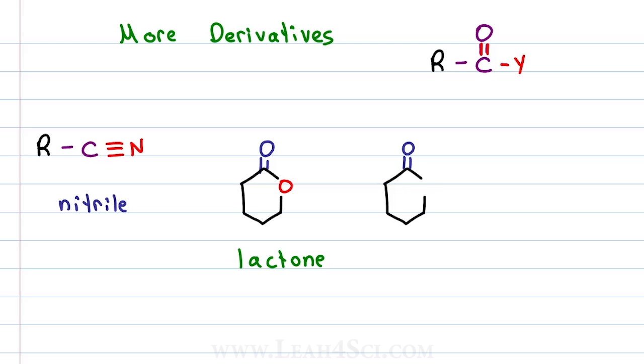If I have the same structure with a nitrogen instead of an oxygen along with a hydrogen, because nitrogen needs three bonds where oxygen needs two, you should recognize this as a cyclic amide.